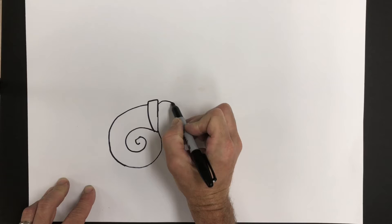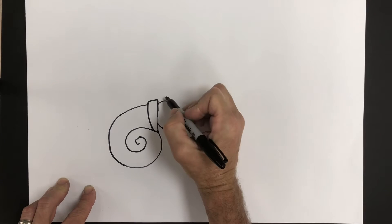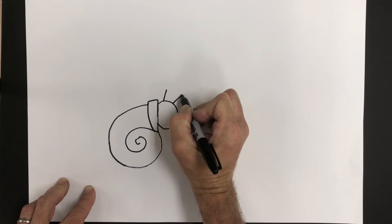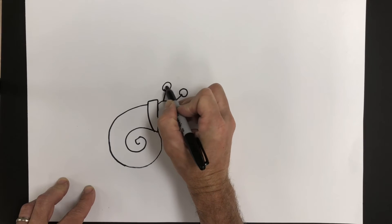Next, we'll draw the head, which is really kind of part of a circle, and two little lines with circles at the top for the eyes.